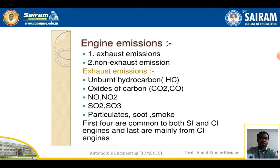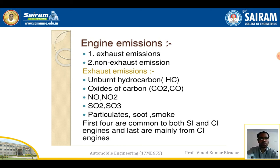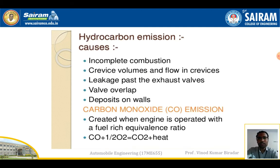Engine emission can be divided into two types: exhaust emission and non-exhaust emission. Exhaust emissions include unburnt hydrocarbons (HC), oxides of carbon (CO and CO2), nitrogen oxides (NOx), SO2, SO3, and particulate smoke — these are harmful gases released from the vehicle. The first four are common to both SI and CI engines; the last ones are mainly from CI (diesel) engines.